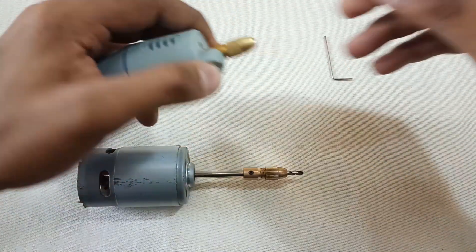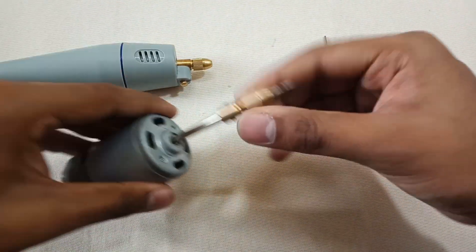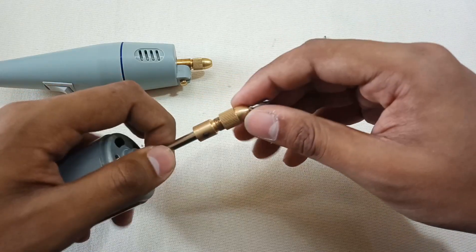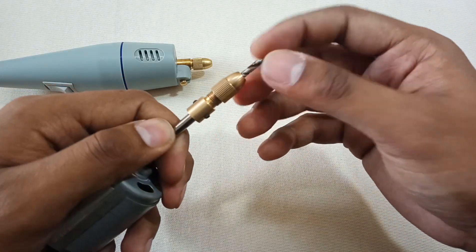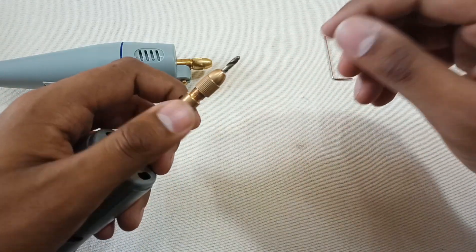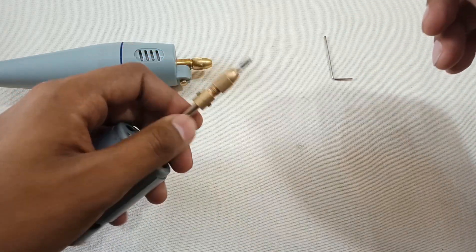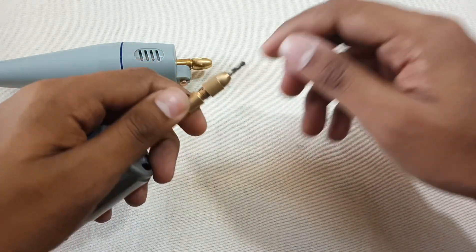But the one thing is that you cannot attach big drill bits onto it. You can still drill small holes with the help of this, sanding, polishing, and some other things.